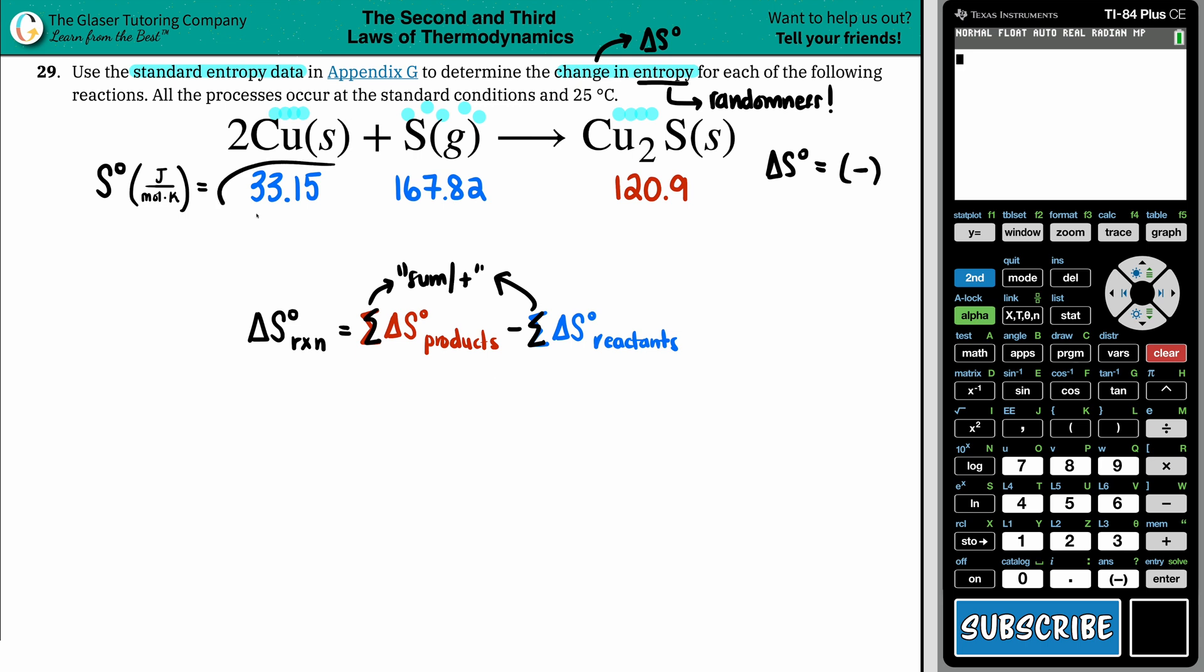Now are these numbers going to be the same, or are they going to be different? Well, that's where your coefficients come into play. You had two coppers. There was no coefficient in front of the sulfur, that means you had one of them. And there was no coefficient in front of the Cu₂S, that means you have one of them. For whatever your coefficient is, that's what you're going to multiply by your value.